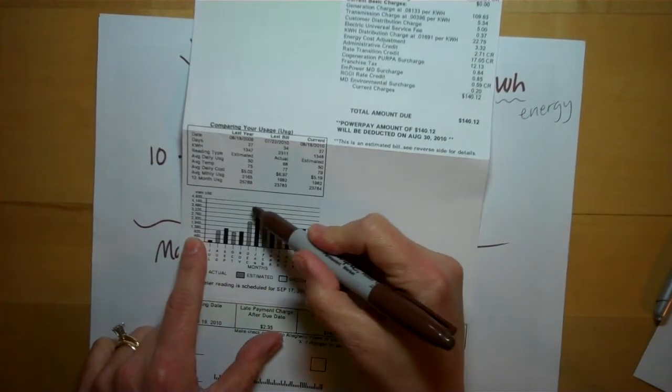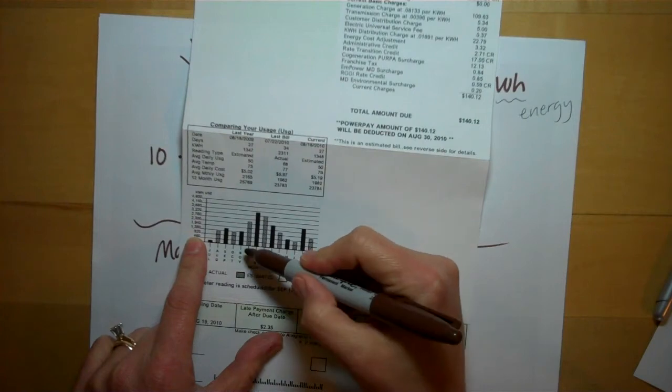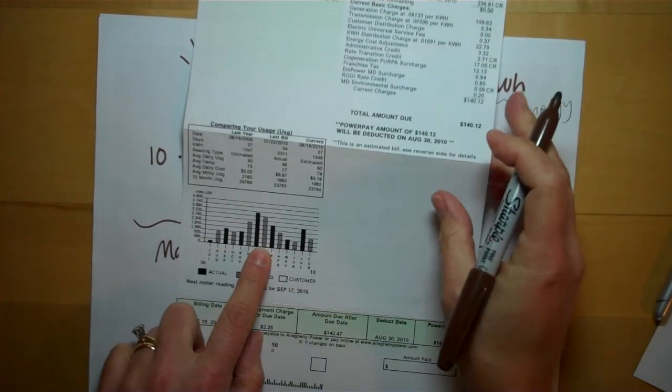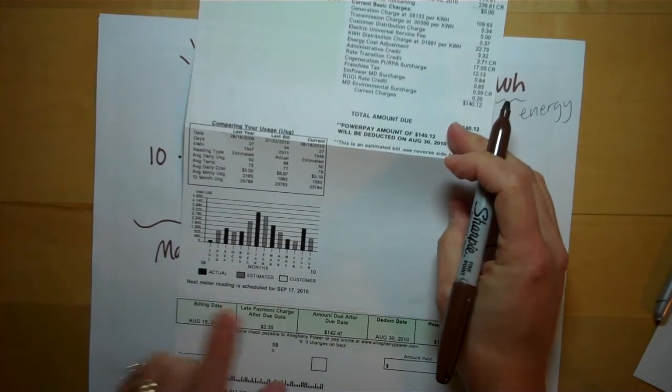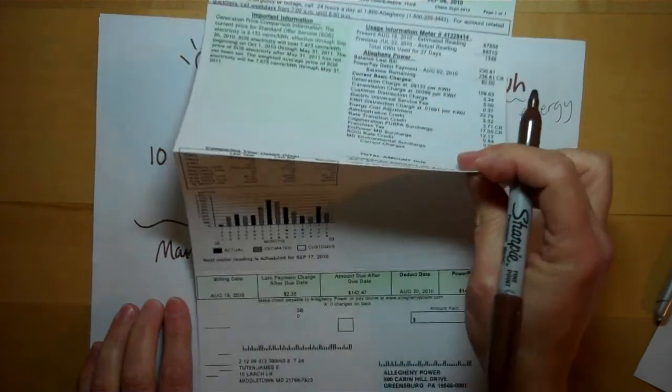You can see this is the middle of the winter. My old house was heated by electricity, so in the winter our electricity use would spike. Some people's electricity usage spikes in the summer when they're running air conditioners.